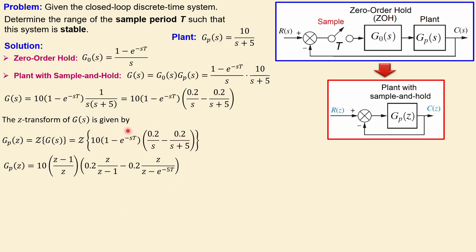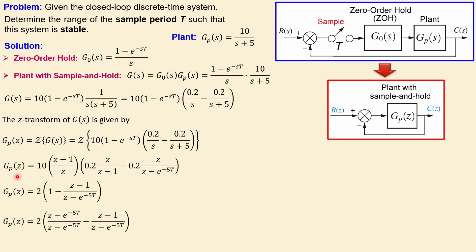We can simplify by cancelling z terms in numerator and denominator, and also cancelling (z-1) terms. Taking 0.2 outside and multiplying by 10 gives a factor of 2. We can further simplify by combining the two fractions into one, which will be easier to work with later. Now we have the complete plant with sample and hold in the z-domain.